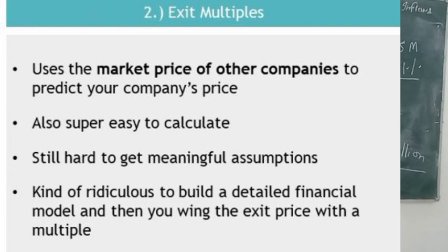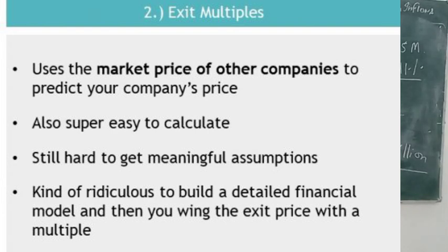The perpetuity growth method states that the terminal value must reflect the net realizable value of a company's assets at that time. The exit multiple method estimates a fair price by multiplying financial statistics — such as sales, profit, earnings before interest, taxes, depreciation, and amortization (EBITDA) — by a factor common to similar firms that were recently acquired.